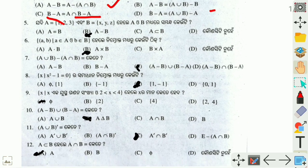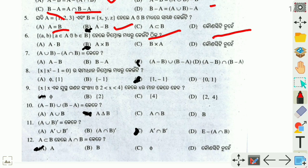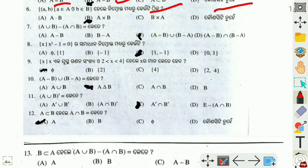For A minus B: an element belongs to A minus B if it belongs to A but not to B. This is the definition of set difference.